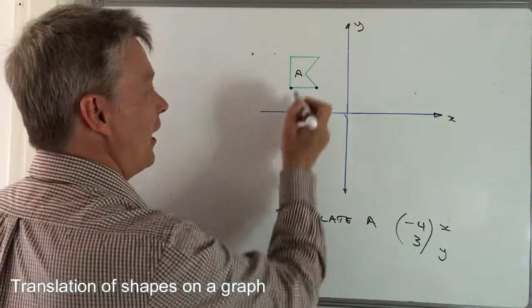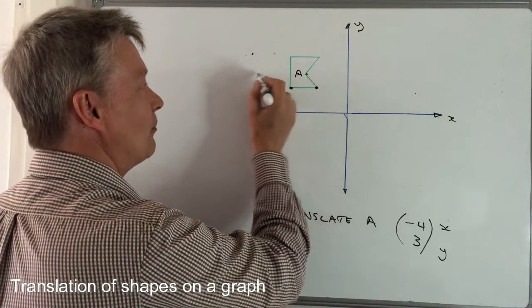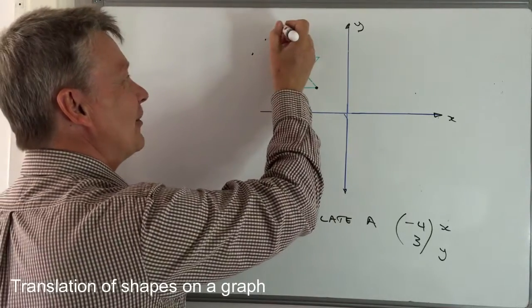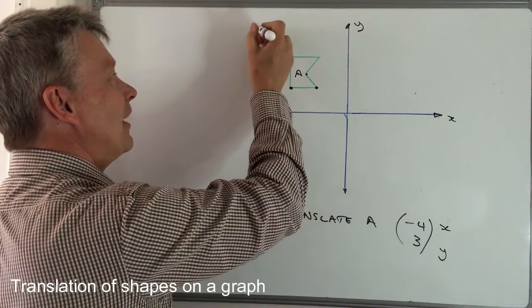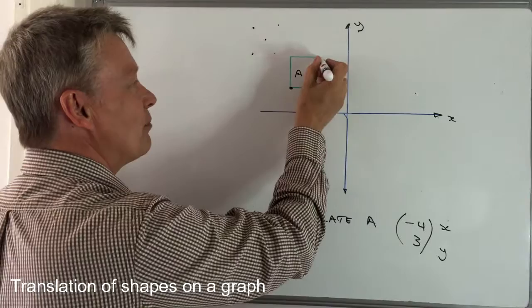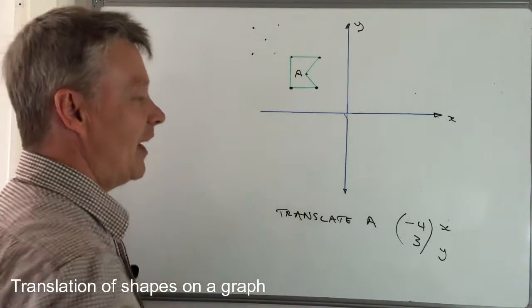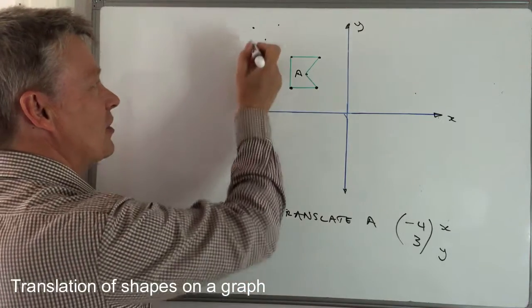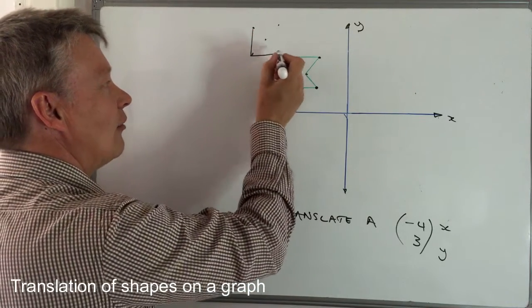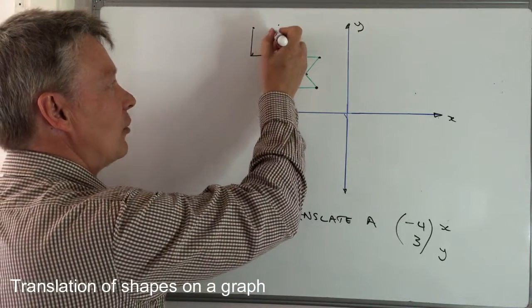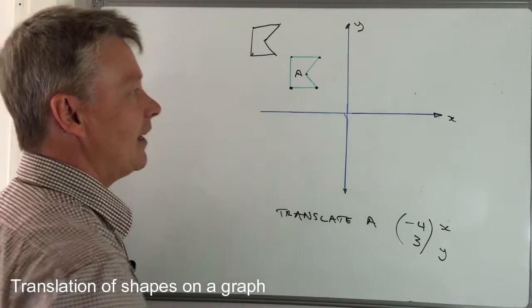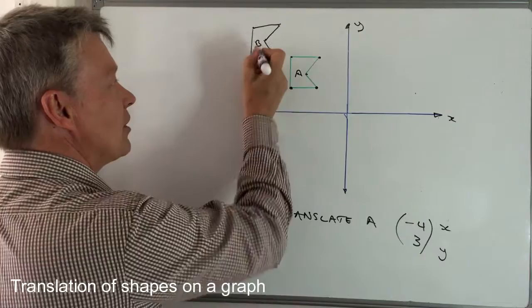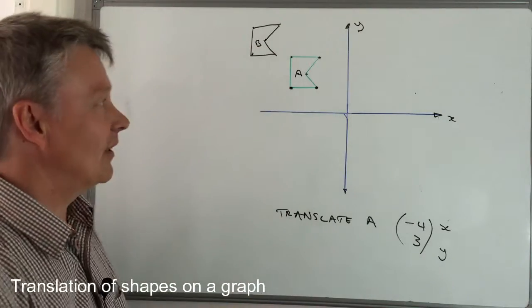I choose another point - along minus four, up three - it's going to end up like that. What you'll end up with is all of these points you've then translated by the vector it's given you. Then it's simply a case of drawing the lines to connect them and labeling the shape, and generally it will say label the shape B or C or something like that.